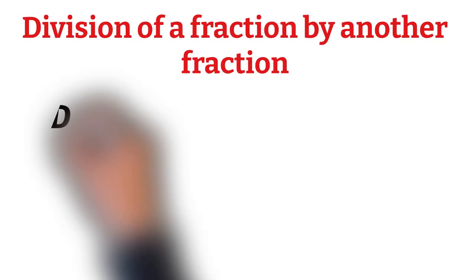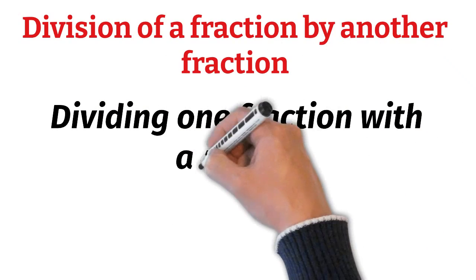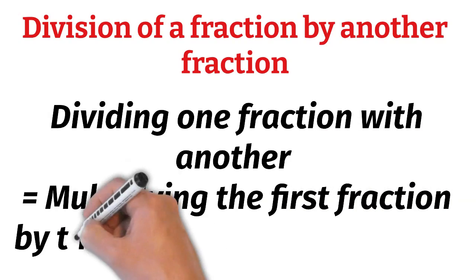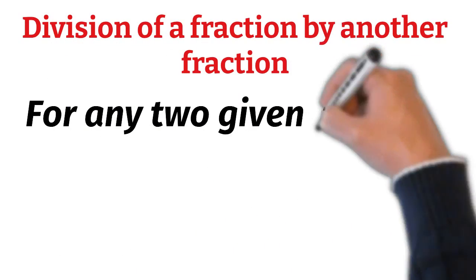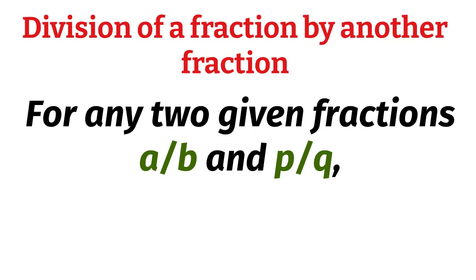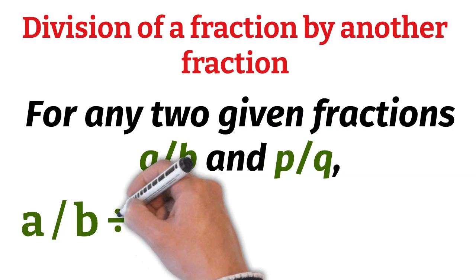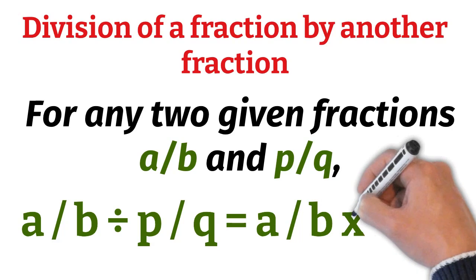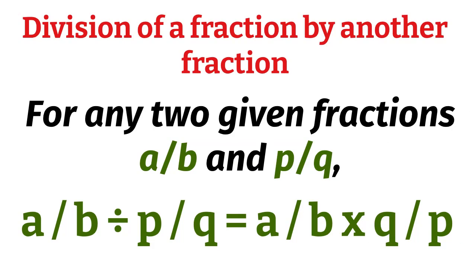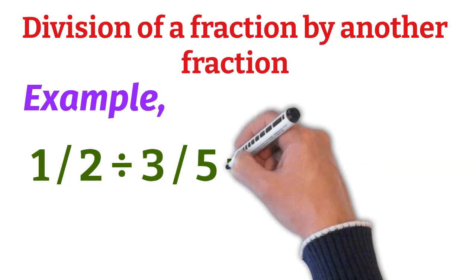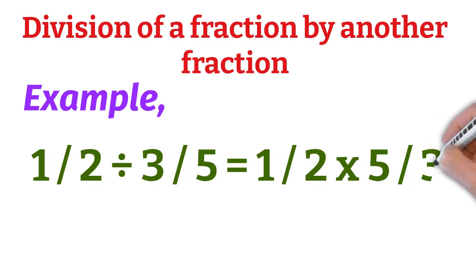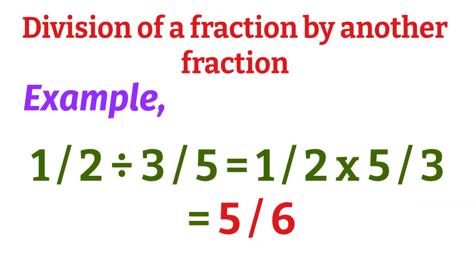Division of a fraction by another fraction: dividing a fraction by another fraction is the same as multiplying the first fraction by the reciprocal of the second. Thus, for any two given fractions a/b and p/q: a/b ÷ p/q = a/b × q/p. For example, 1/2 ÷ 3/5 = 1/2 × 5/3 = 5/6.